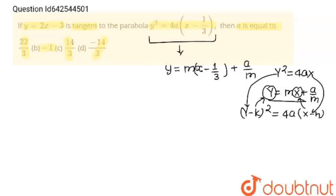Now, I am going to multiply this m inside the bracket. So this will become y = mx - m/3 + a/m. And what is the equation of tangent? y = 2x - 3.